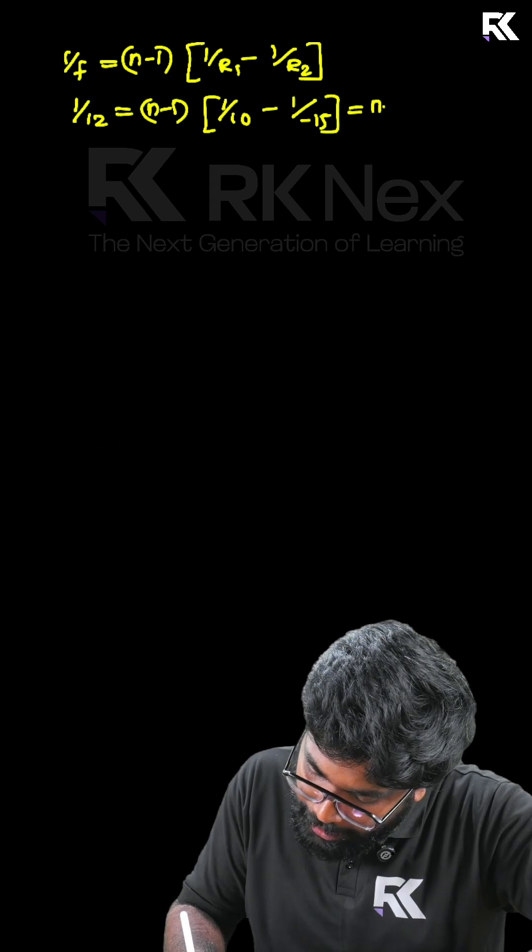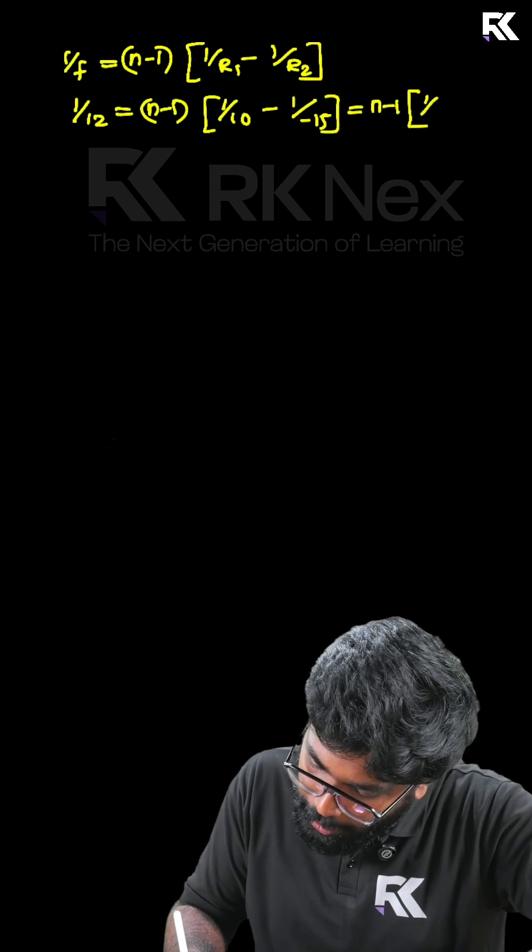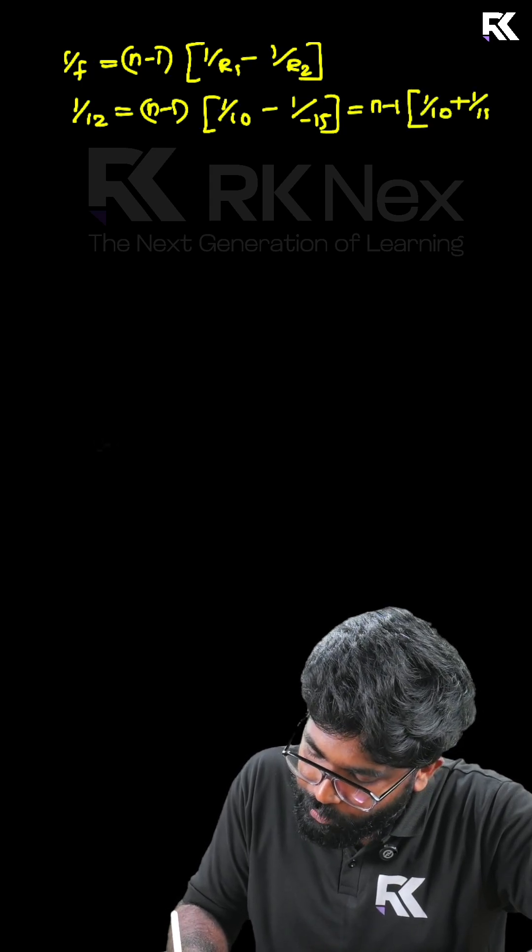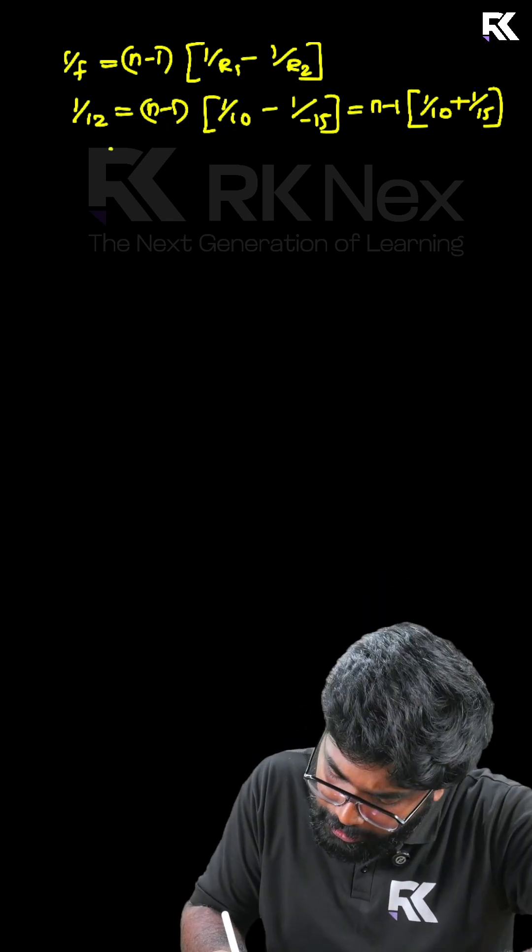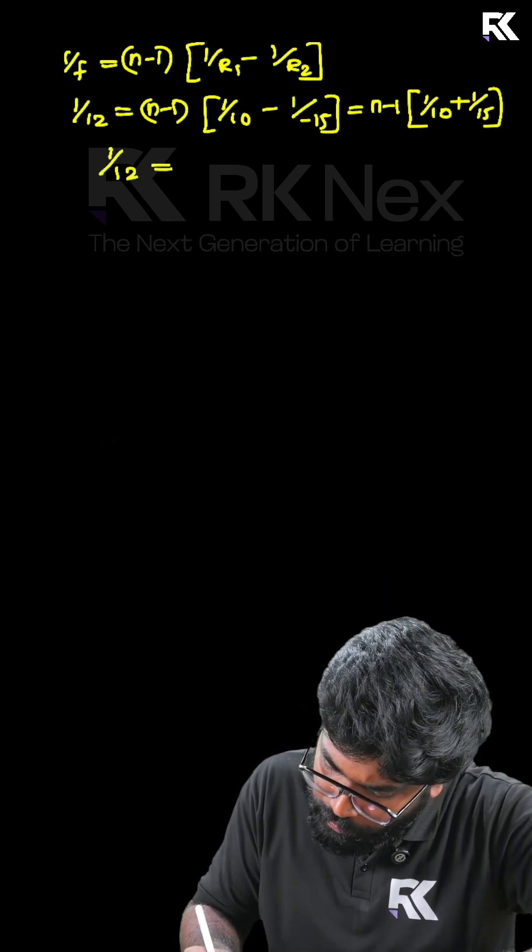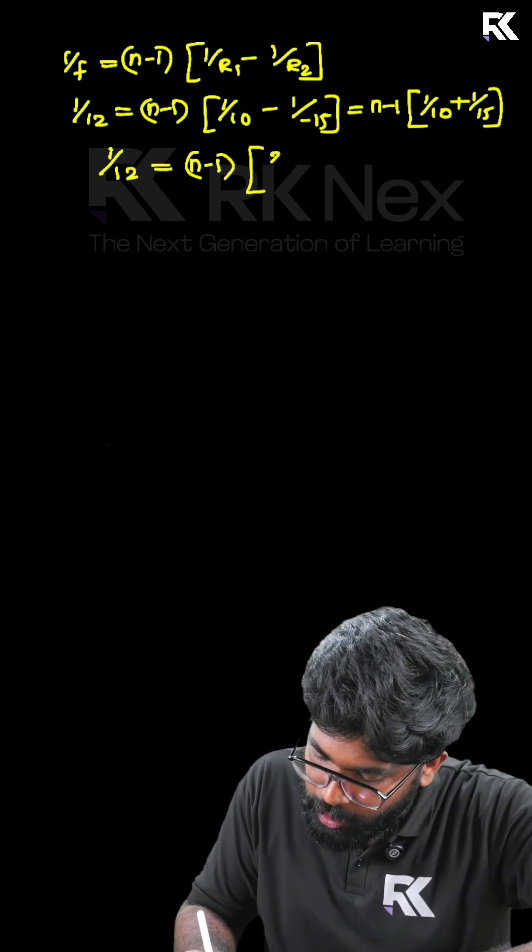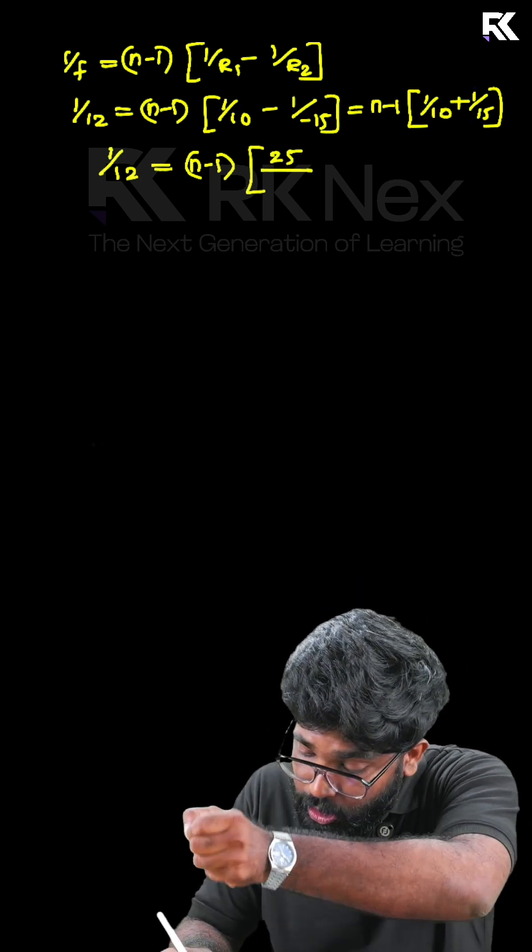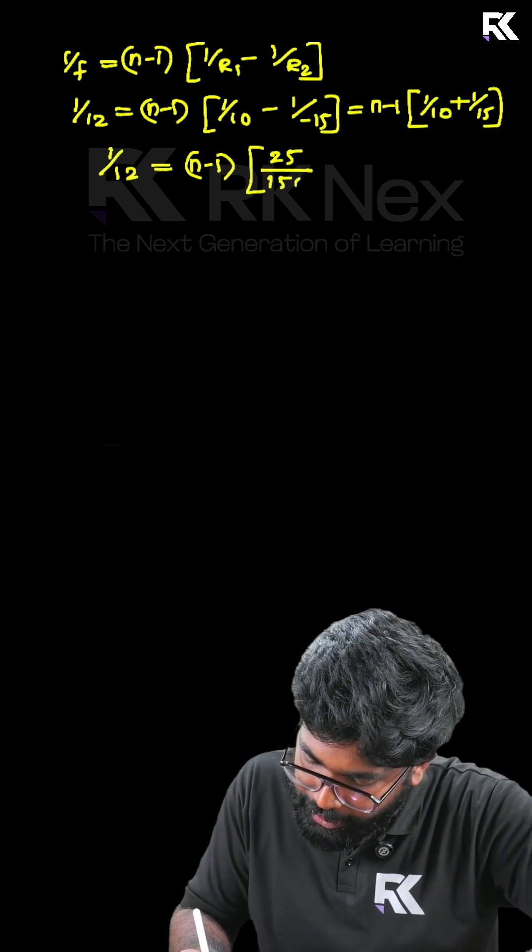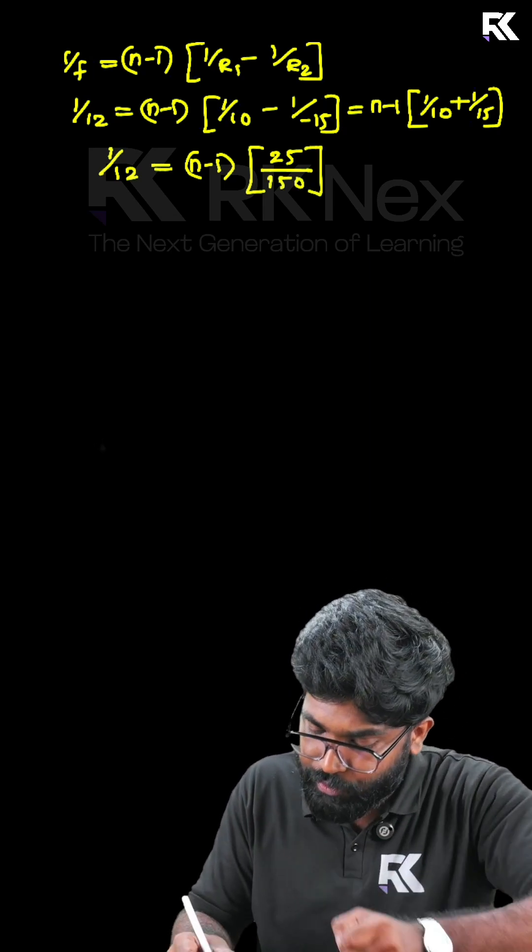That is equal to n minus 1 into 1 by 10 plus 1 by 15. Cross multiply, we get 1 by 12 is equal to n minus 1 into 10 plus 15, 25. 10 into 15 is 150. 25 divided by 150.